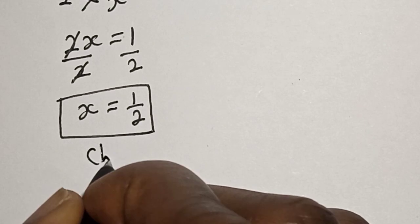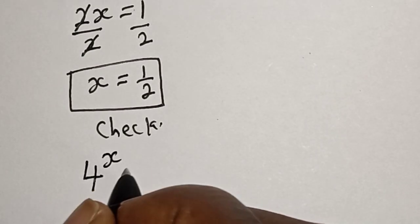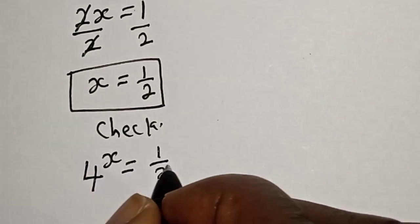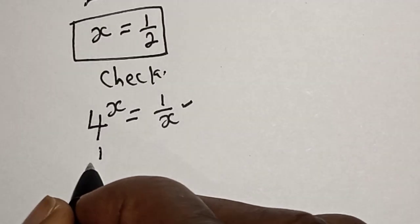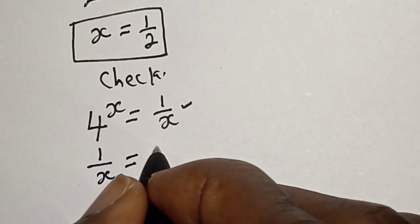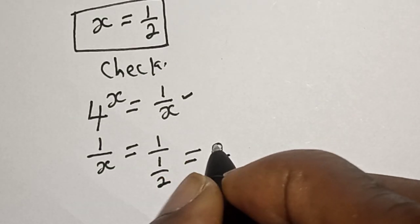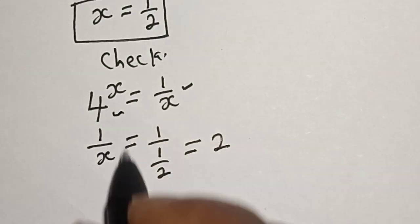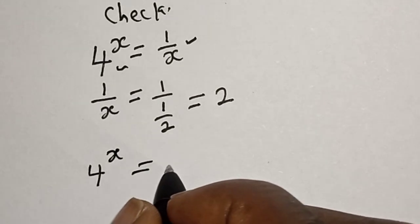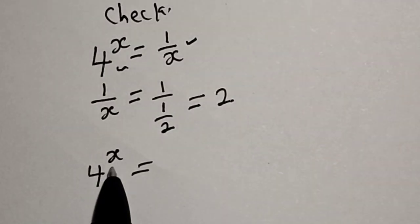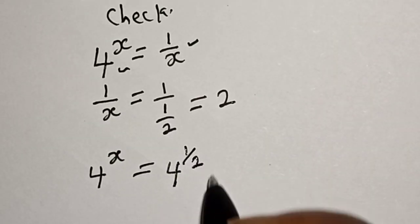Let's check. The given equation is 4 to the power of x is equal to 1 over x. Let's work with the right hand side: 1 over x is equal to 1 over (1 over 2), which is equal to 2. Then let's work with the left hand side: 4 raised to power x is equal to 4 raised to power 1 over 2.